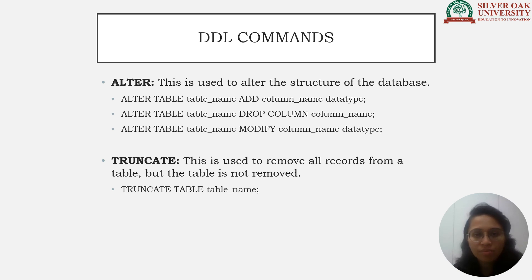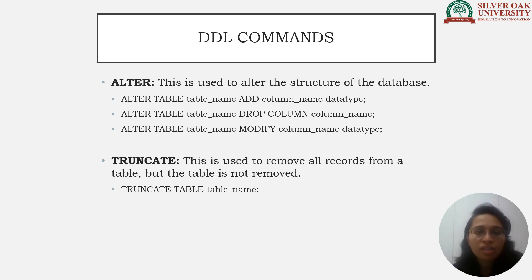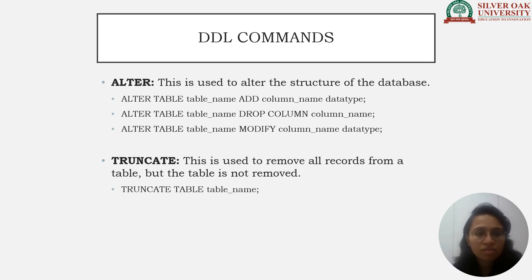To add a column in an existing table, use ALTER TABLE table_name ADD column_name datatype. To drop a column from an existing table, use ALTER TABLE table_name DROP COLUMN column_name. To change the data type of an existing column, use ALTER TABLE table_name MODIFY column_name datatype.